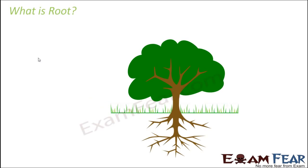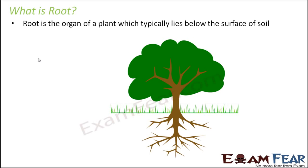So the first question that comes to our mind is: what is root? Root is that organ of a plant which typically lies below the surface of soil. Please note the word 'typically' here — it is not that it always lies below the surface of soil, but in most cases it does. It is only in some special cases where it doesn't lie below the surface of soil.